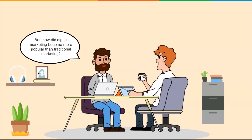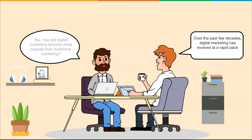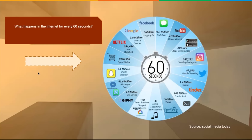Digital marketing has become more popular than traditional marketing — that's not a surprise. Over the past few decades, digital marketing has evolved at a rapid pace. These days, a lot of people spend most of their time on the internet. So what happens on the internet every 60 seconds? According to Social Media Today, there's a lot of snaps, clicks, texts, videos watched, pictures taken, voice-activated activity, tweets, emails, and swipes — a lot going on in 60 seconds.